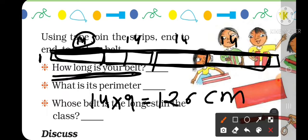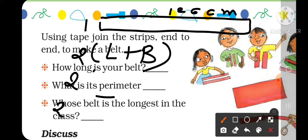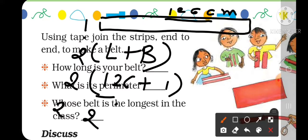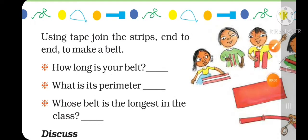My belt length is 126 cm. Now how much is the perimeter of this new strip? My strip is 1 cm wide and 126 cm long. So the perimeter formula is 2L plus B. Length is 126 cm, breadth is 1. So 2 into 127 is 254 cm. So this perimeter is 254 cm. Whose belt is the longest?